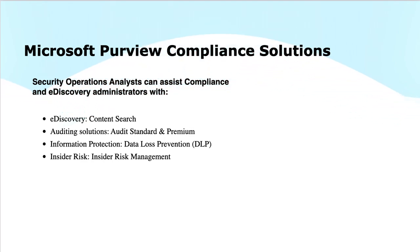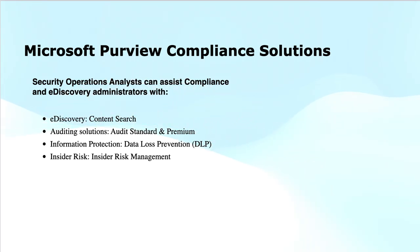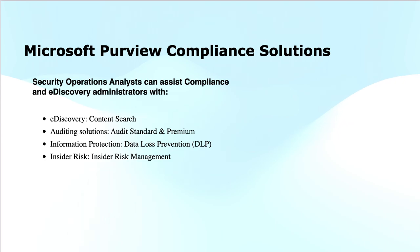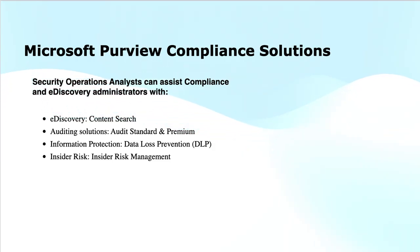The next service is data loss prevention. DLP is a set of practices and tools designed to protect sensitive information — like financial records, health records, or credit card numbers — and prevent users from sharing it inappropriately. Information protection focuses on safeguarding sensitive data by controlling access and usage, ensuring only authorized individuals can view or manipulate it. DLP might block an employee from emailing a document containing sensitive financial data to someone outside the organization.